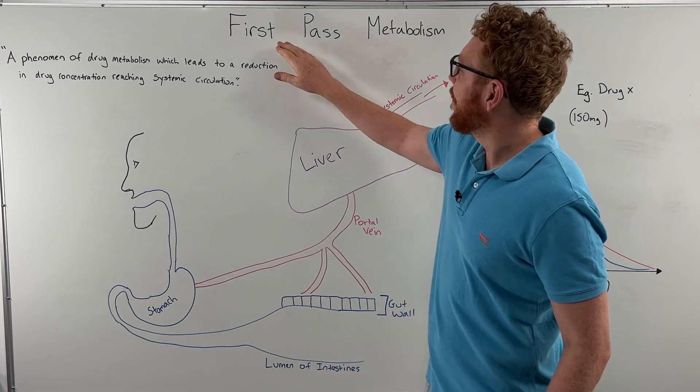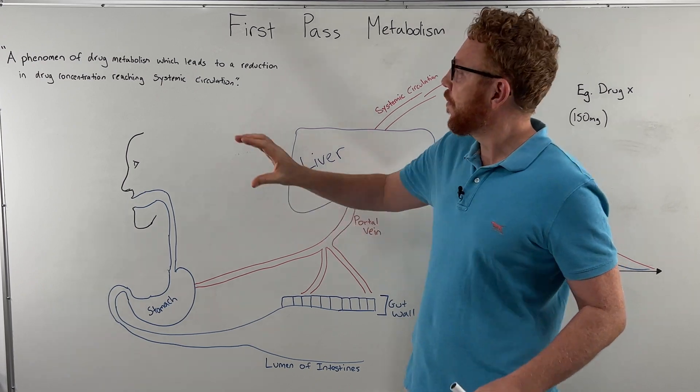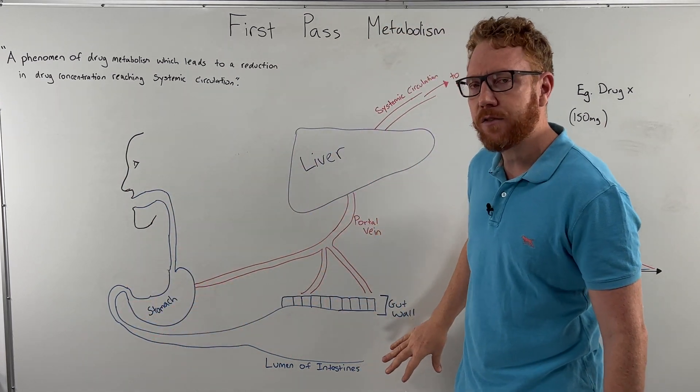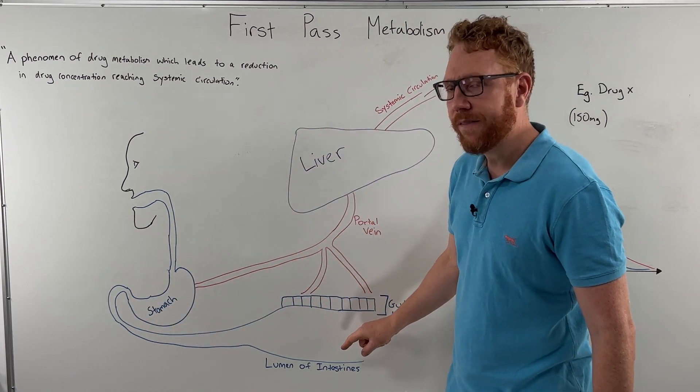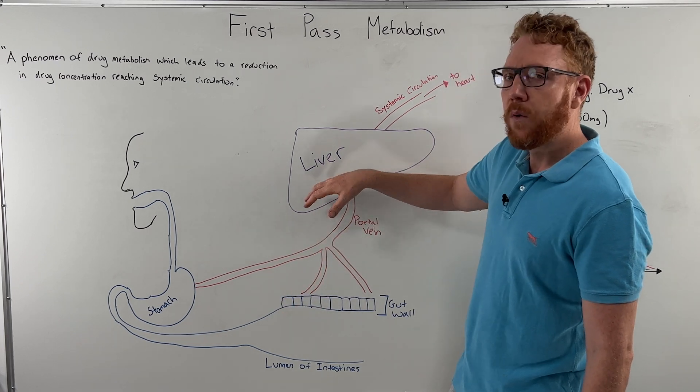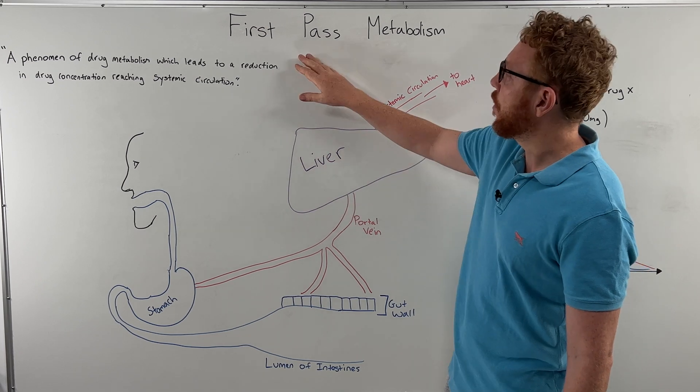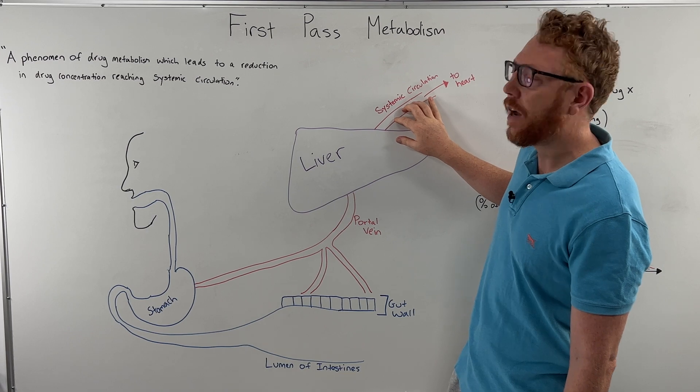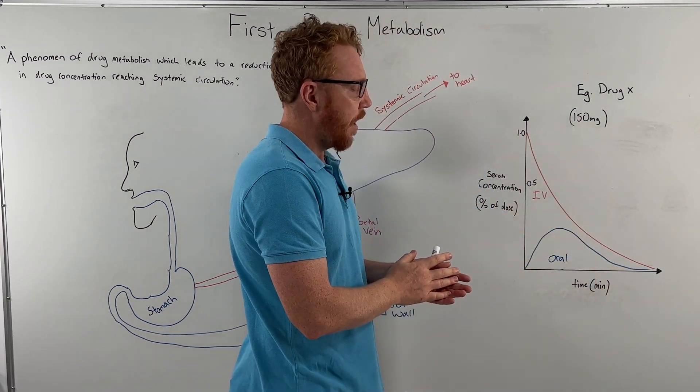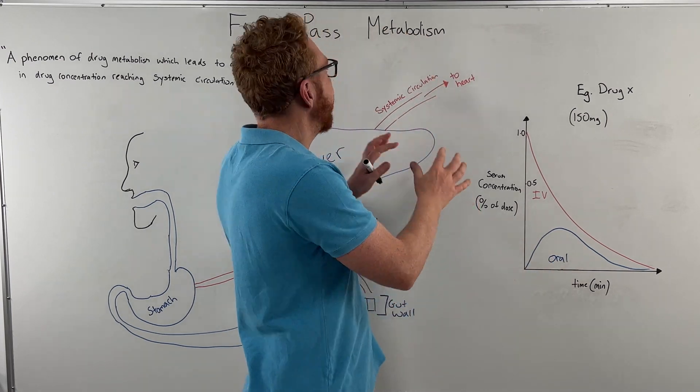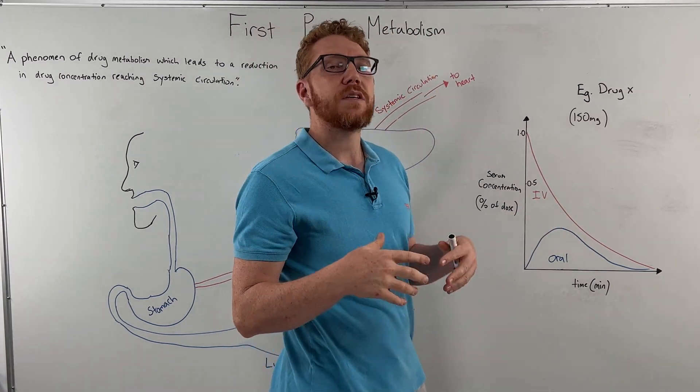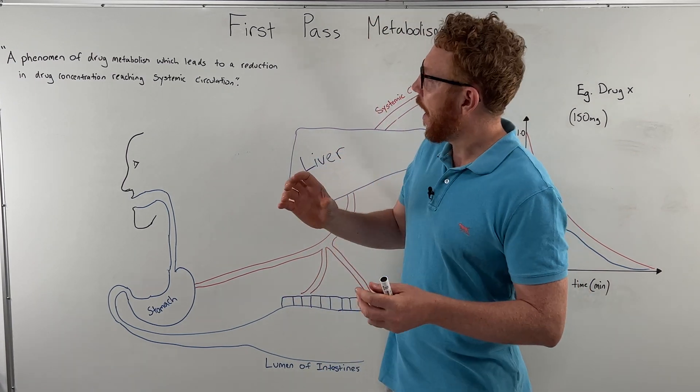Hi everyone, Dr. Matt here. In this video we're going to look at first pass metabolism. We'll first look at a definition of what this term means, then we'll have a look at a schematic drawing of the gastrointestinal tract and how oral medications are influenced by the way they're absorbed, metabolized, and taken via the portal blood to the liver, where the liver can metabolize it to finally see how much of the drug that we initially took gains access to the systemic circulation. And then finally we'll compare how an oral medication which is influenced by first pass metabolism compares to an IV medication in respect to its bioavailability.